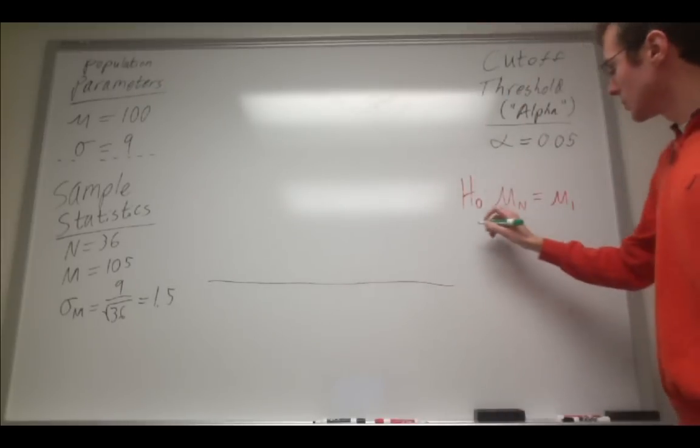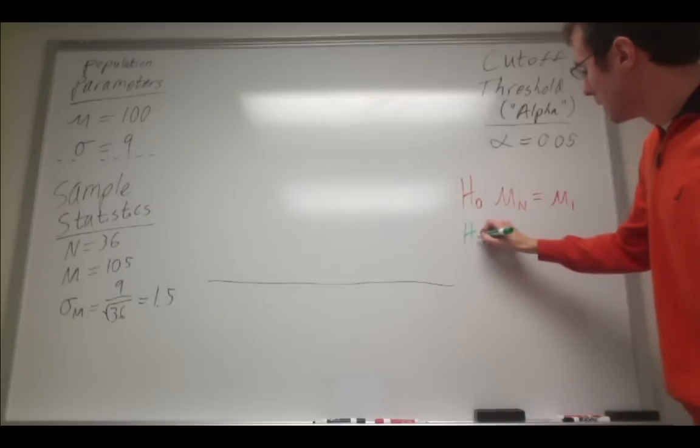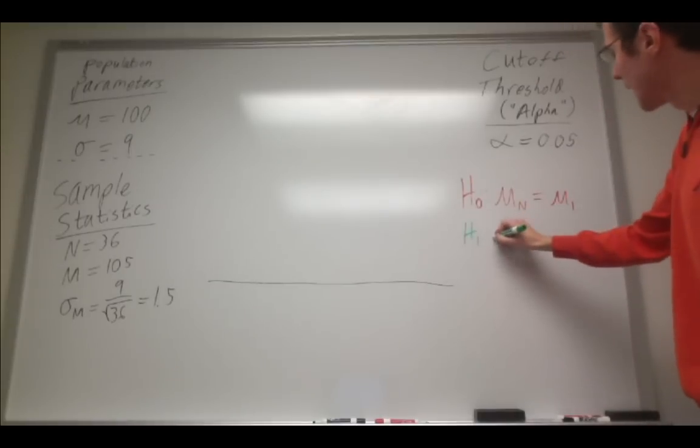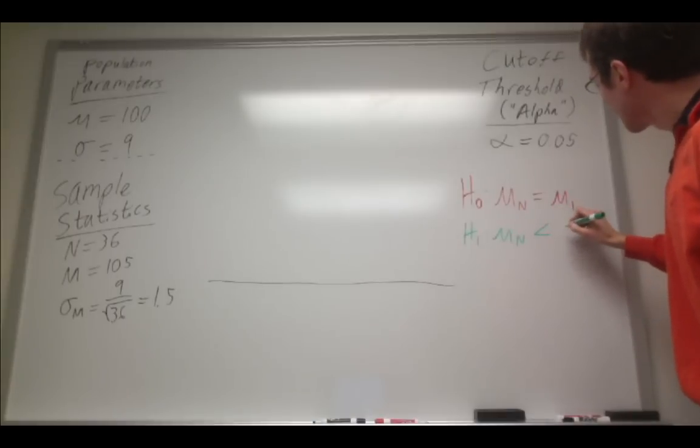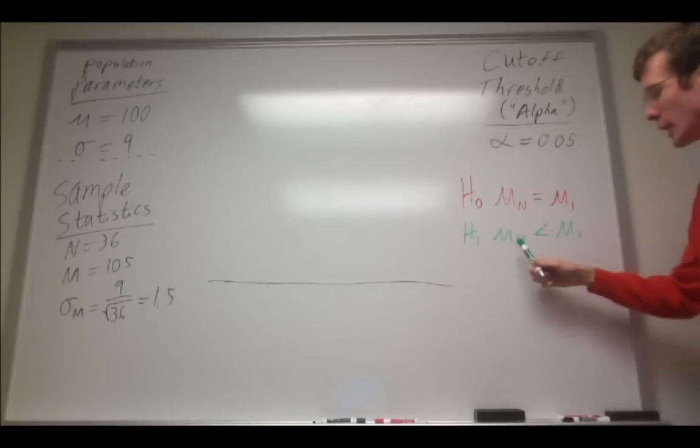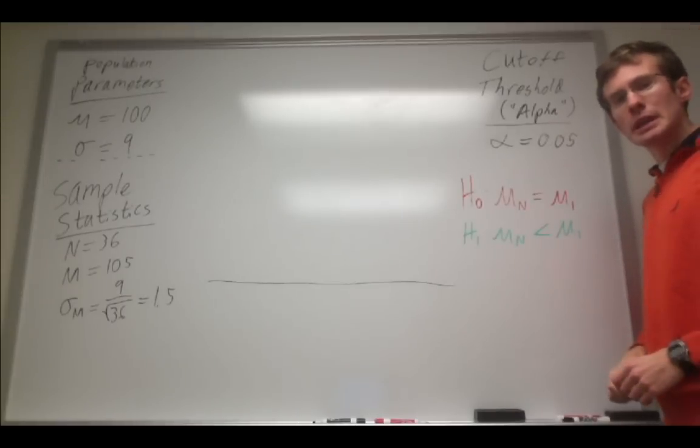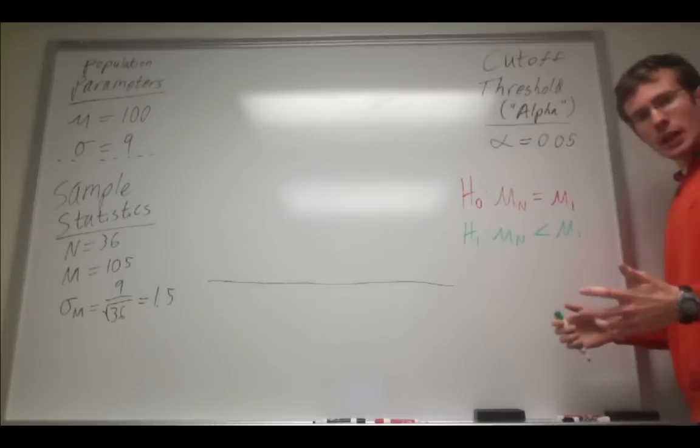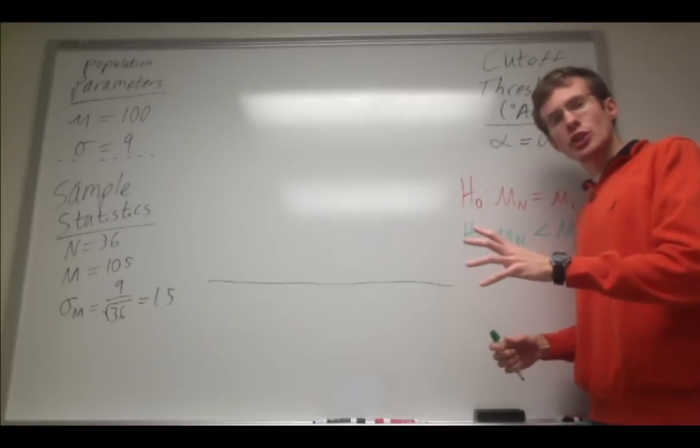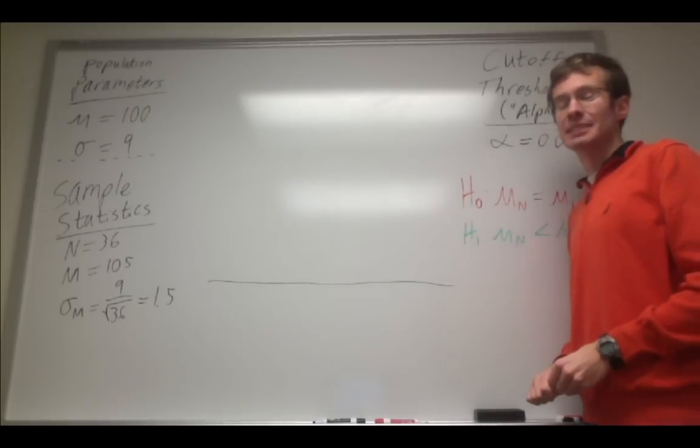My alternative hypothesis, on the other hand, specifies that there should be an effect of eating spinach, and that the IQ of the spinach-eating group should be greater than the mean of the null distribution. This is an example of something called a directional or one-tailed significance test.